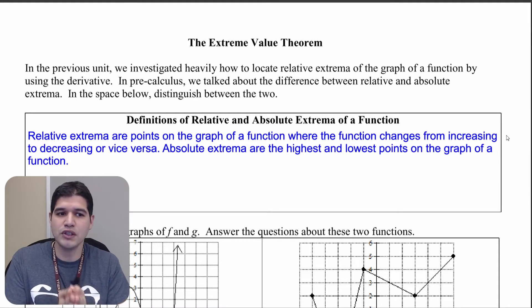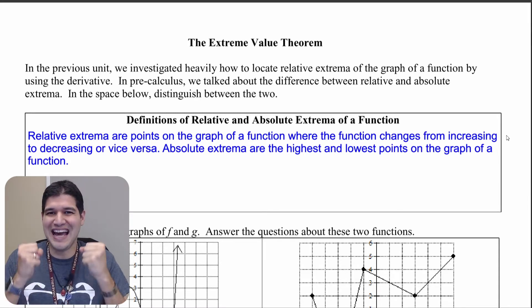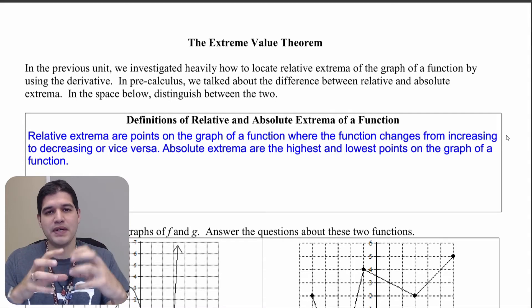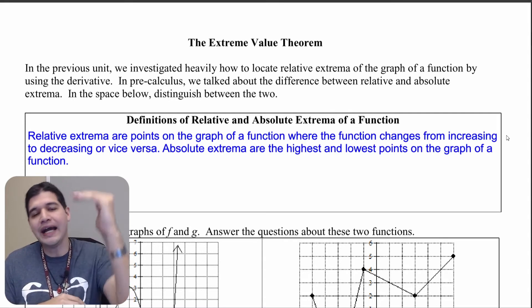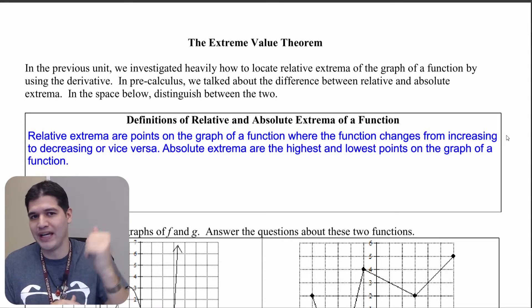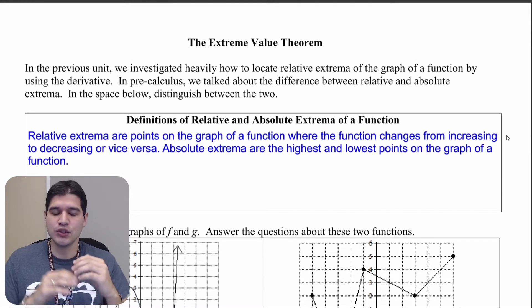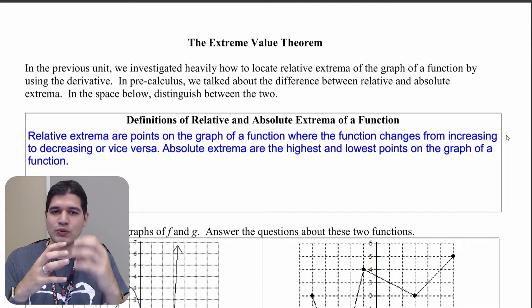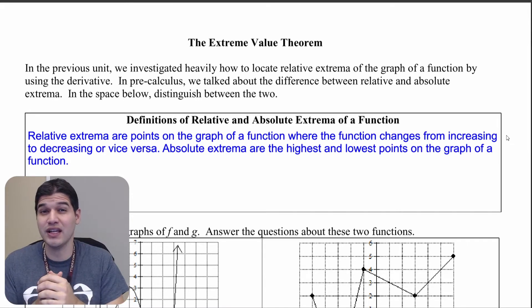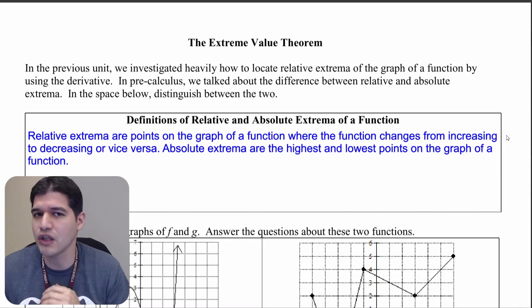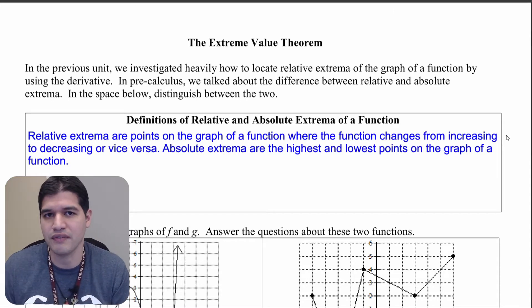Absolute extrema are the global maximums and minimums — the highest high point and the lowest low point. We're not worried about all the relative points where the graph is switching from increasing to decreasing; we're just worried about the highest point on the graph and the lowest point on the graph.